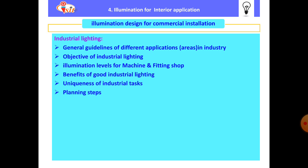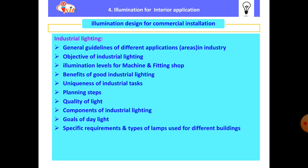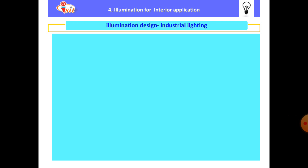These are the points we have already covered in previous videos. Now we are going to move to the next points: quality of light, components of industrial lighting, goals of daylight, specific requirements, and types of lamps used for different buildings. We will see the remaining parts of industrial lighting one by one.